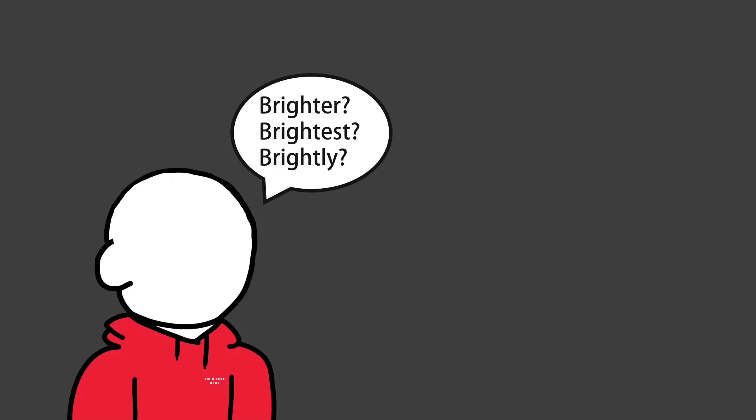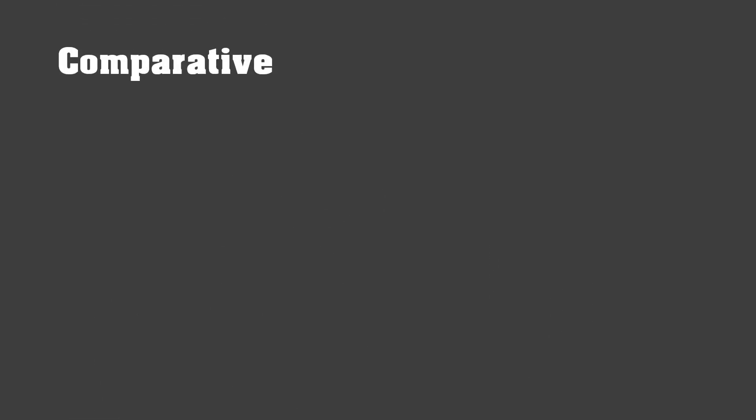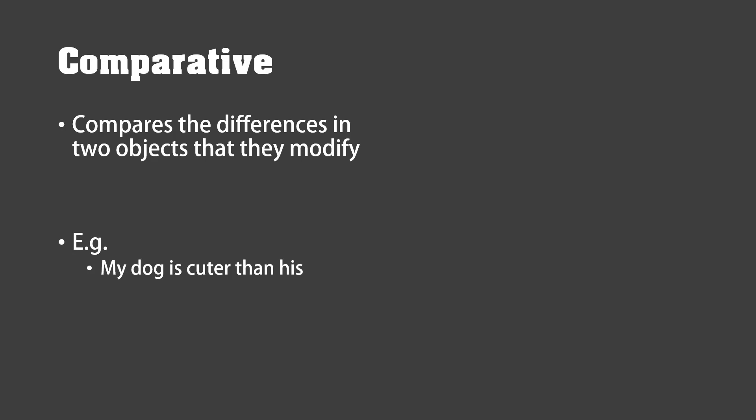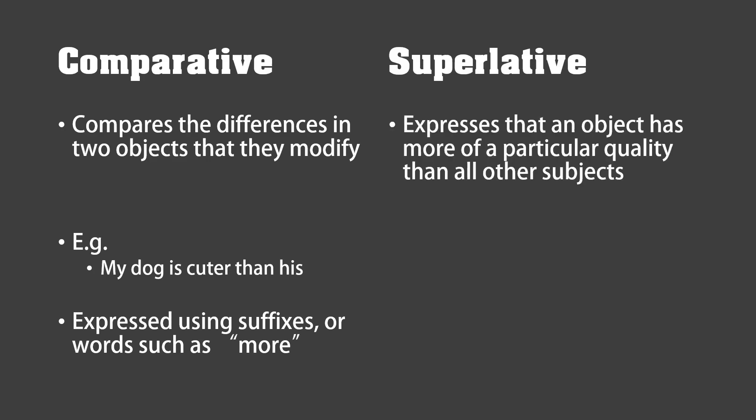But what about brighter, brightest, and brightly? Aren't those different types of adjectives? Well, yeah, but let me move on to that. Comparative adjectives compare the differences between two objects: 'my dog is cuter than his.' These are often expressed using suffixes or words such as 'more'—this is English, of course; other languages do other things. Superlative expresses an object has more of a particular quality, such as 'my dog is the cutest,' and is expressed using suffixes or words such as 'the most.'